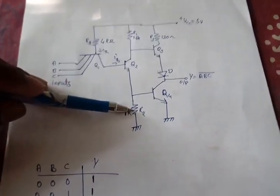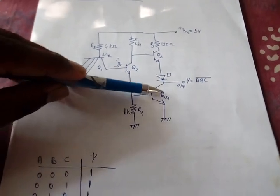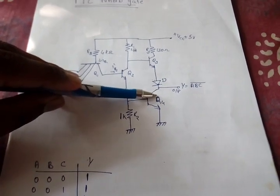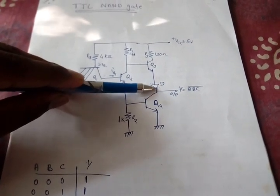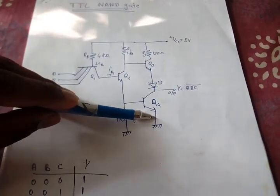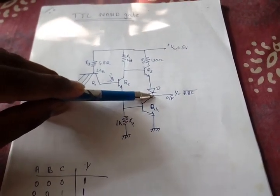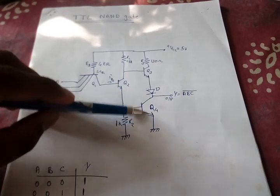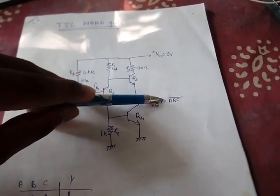Thus, the drop across R2 will not be sufficient to switch on the Q4. Thus, the connection between here and ground D will be open circuited. Then, current cannot pass through to the ground. Thus, here Y will be one.